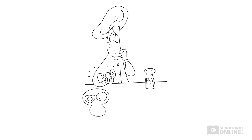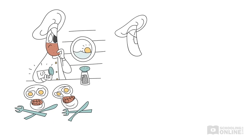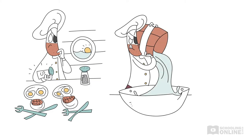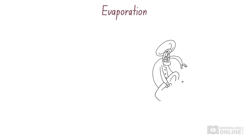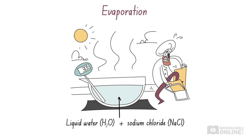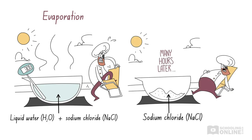Cookie is busy refilling the ship's salt shakers. Seawater is a homogeneous mixture containing sodium chloride and water. Water has a much lower boiling point than sodium chloride, so since there is a large difference between their boiling points, Cookie can evaporate the water to obtain pure salt. He leaves some seawater under the sun in an evaporating dish with a black cloth underneath to absorb heat. It warms up to about 30 degrees Celsius, and even though this is lower than the boiling point of water, some of the water evaporates. After a long time, he is left with salt crystals.